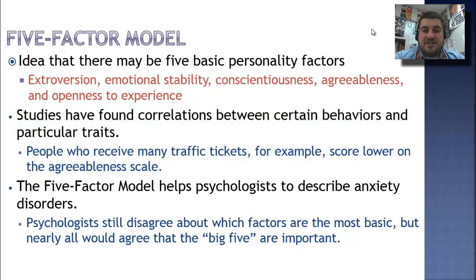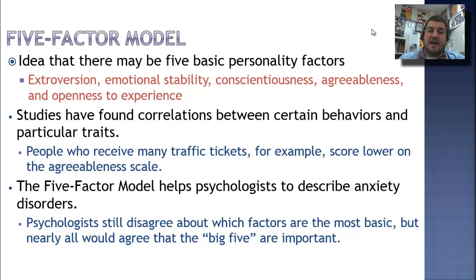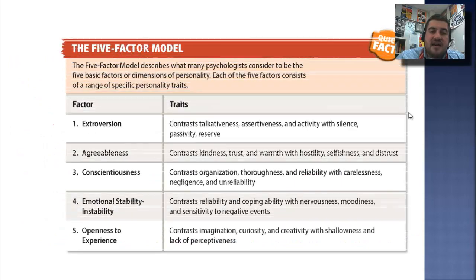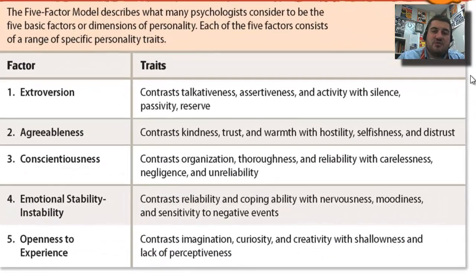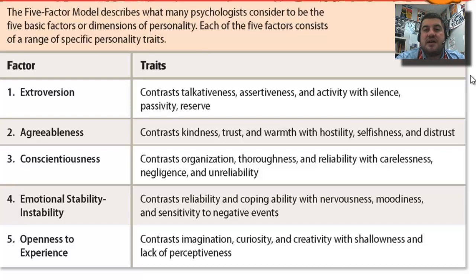The five-factor model also helps psychologists describe basic anxiety disorders, and that's what it's used for today. Psychologists have a hard time agreeing on which are the most basic personality traits, but they can agree that these five are important: extroversion, agreeableness, conscientiousness, emotional stability, and openness to experience.